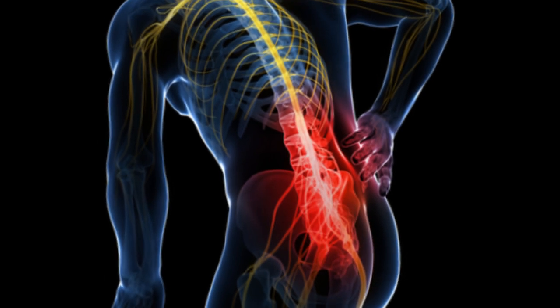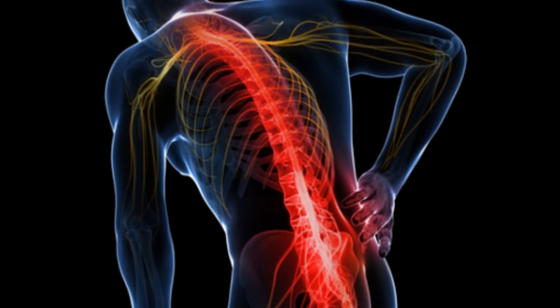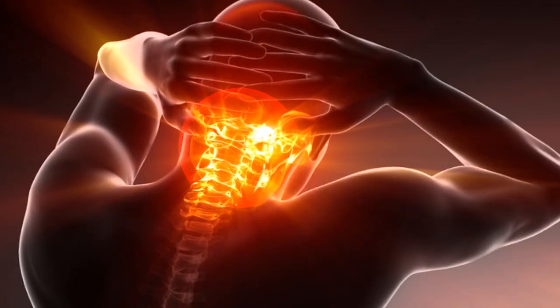Spinal cord stimulation, also called neuromodulation, uses electrical impulses around the spinal cord to prevent pain impulses from reaching the brain.